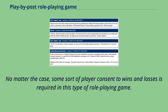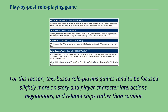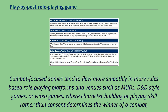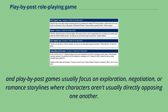No matter the case, some sort of player consent to wins and losses is required in this type of role-playing game. For this reason, text-based role-playing games tend to be focused slightly more on story and player-character interactions, negotiations, and relationships rather than combat. Combat-focused games tend to flow more smoothly in more rules-based role-playing platforms and venues such as MUDs, D&D-style games, or video games, where character building or playing skill rather than consent determines the winner of a combat. Play-by-post games usually focus on exploration, negotiation, or romance storylines where characters aren't usually directly opposing one another.